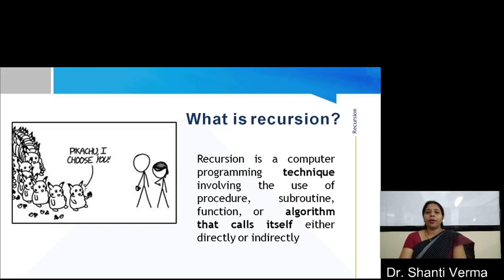A physical world example would be to place two parallel mirrors facing each other. Any object in between them would be reflected recursively. In Python, we know that functions call other functions, but it is even possible for a function to call itself.